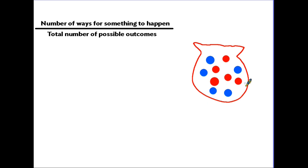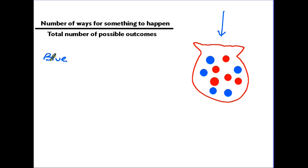There are 5 blue counters and 5 red counters. We are going to work out the probability of picking out a blue counter. Look at the top line of the equation: the number of ways for something to happen. In this case, that something is the blue counter — so how many ways could I pick out a blue one? I could pick that one, that one, that one, that one, or that one. So there are 5 possible ways I could pick out the blue counter — it's just the number of blue ones in there.